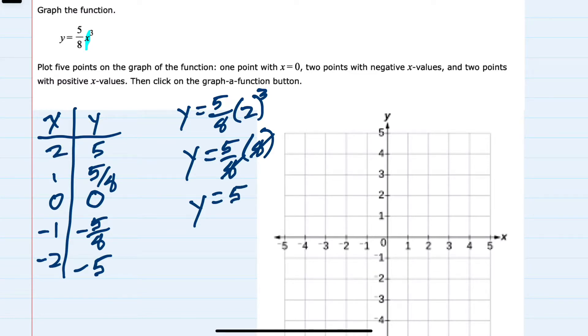So we have found all 5 points. Graphing, we have 0, 0, negative 1, negative 5 eighths, so negative 1, negative 5 eighths is a little further than halfway to negative 1.